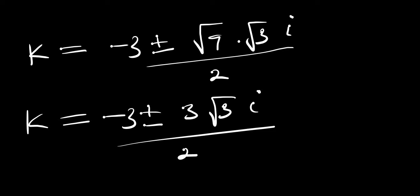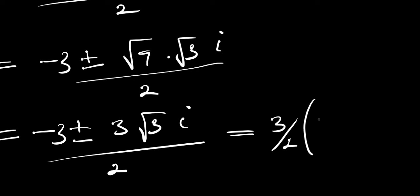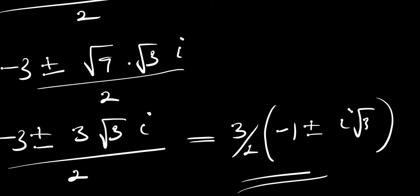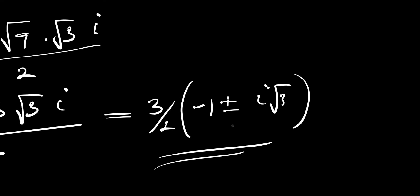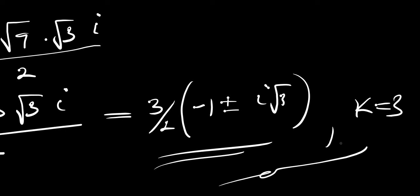Factoring out 3/2, we get k equals 3/2 times (negative 1 plus or minus i√3). So the two complex solutions are k equals (3/2)(−1 + i√3) and k equals (3/2)(−1 − i√3). Combined with k equals 3, we have one real solution and two complex solutions. Thank you and goodbye.